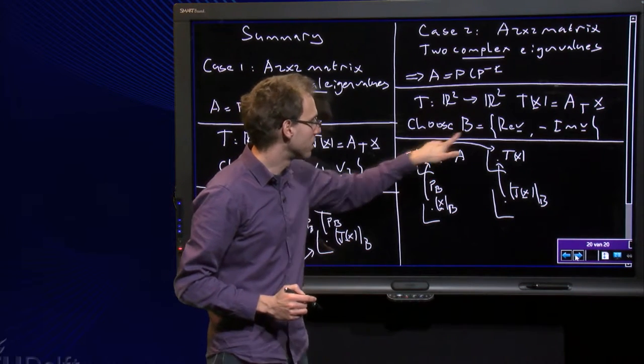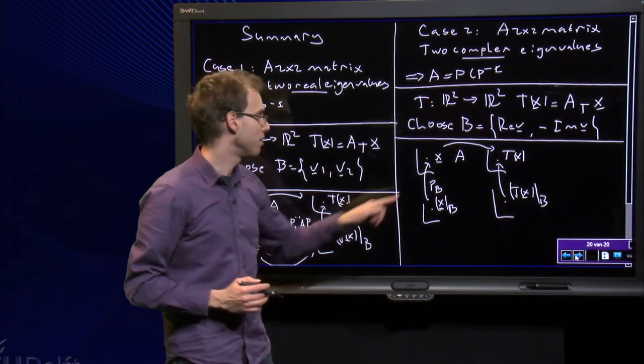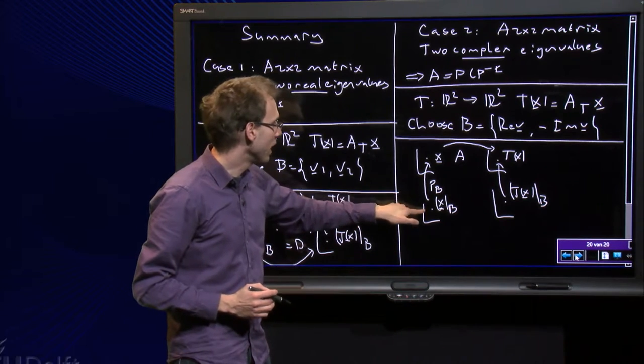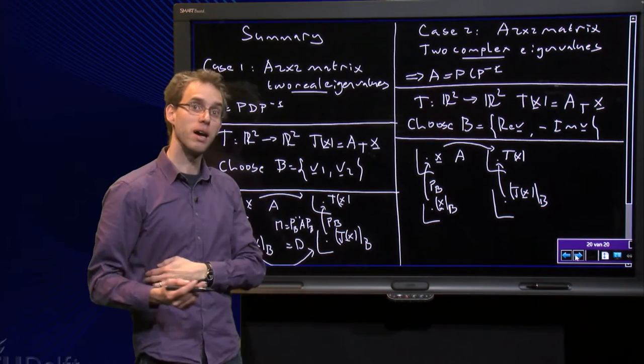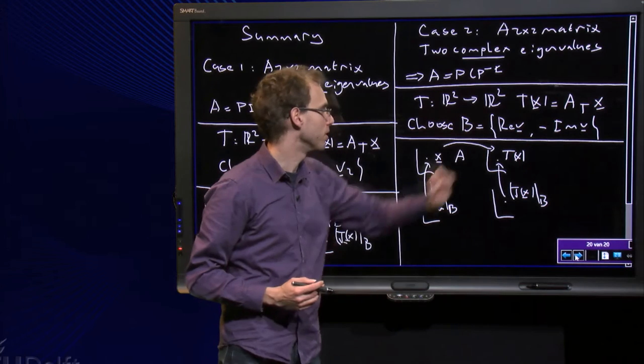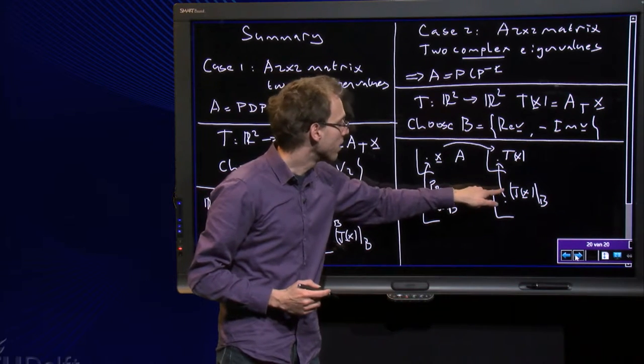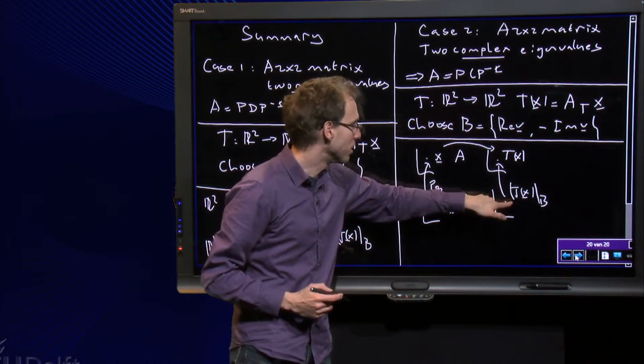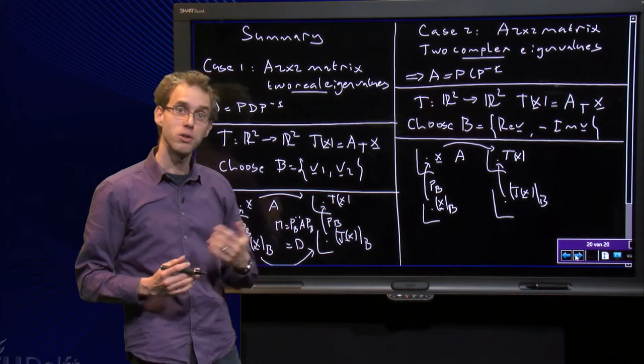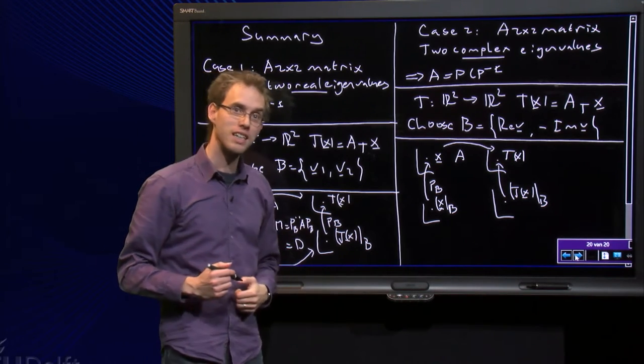We have from X to T of X is represented by A, from XB to X is given by matrix PB with the appropriate basis B, and from T of X in the basis B to T of X is given also by PB. What do I get as a M matrix?